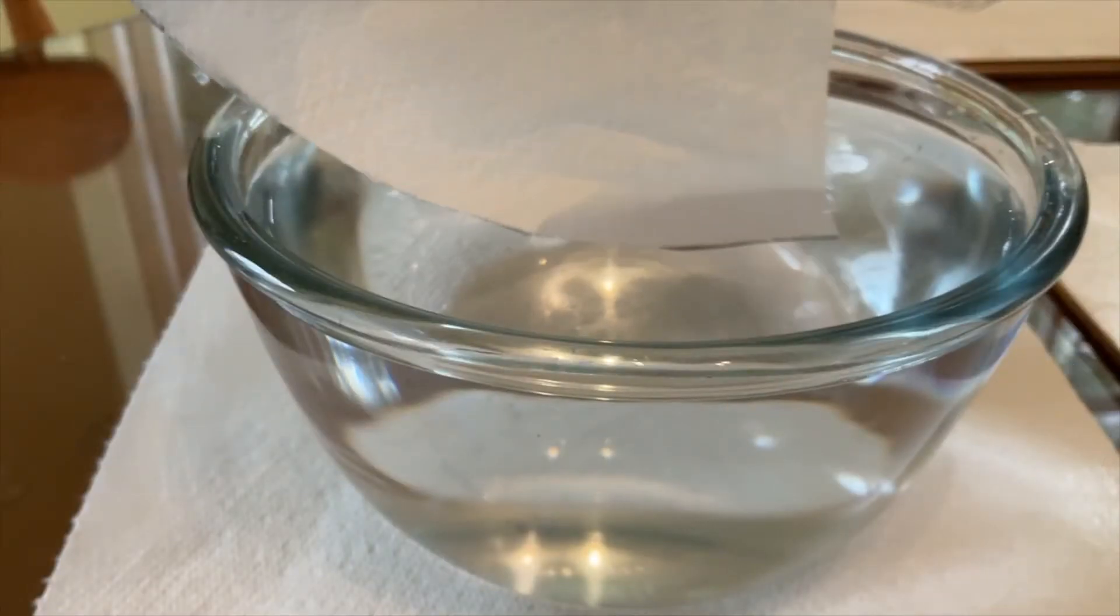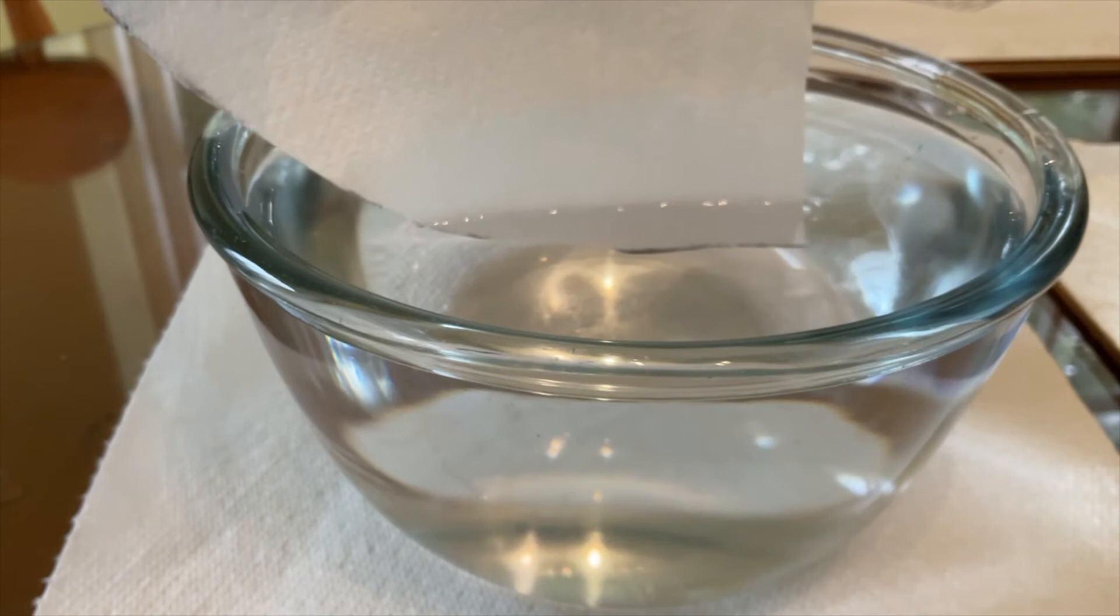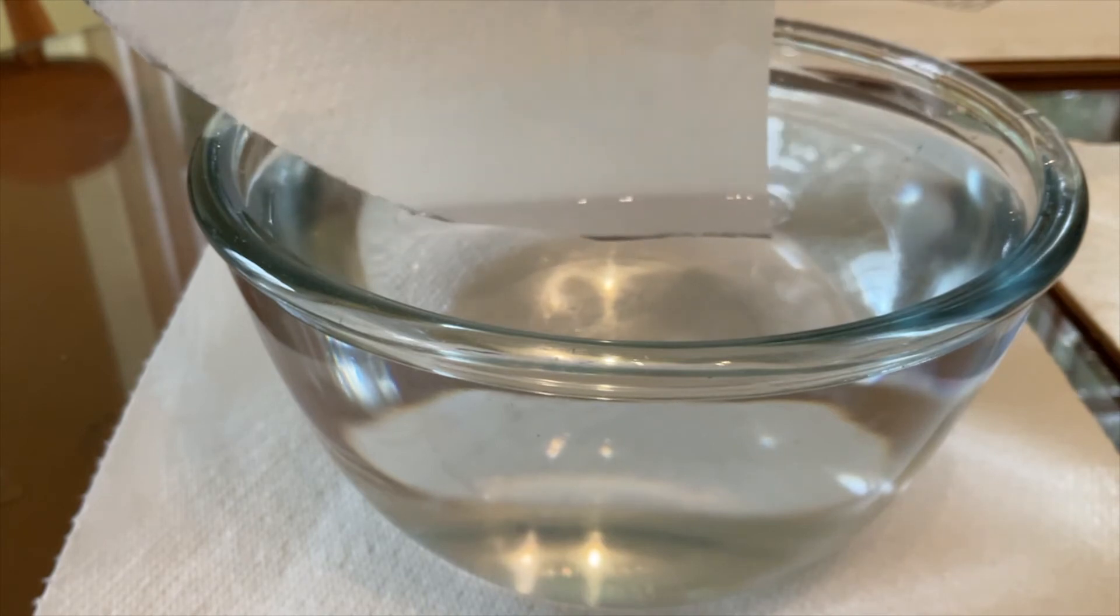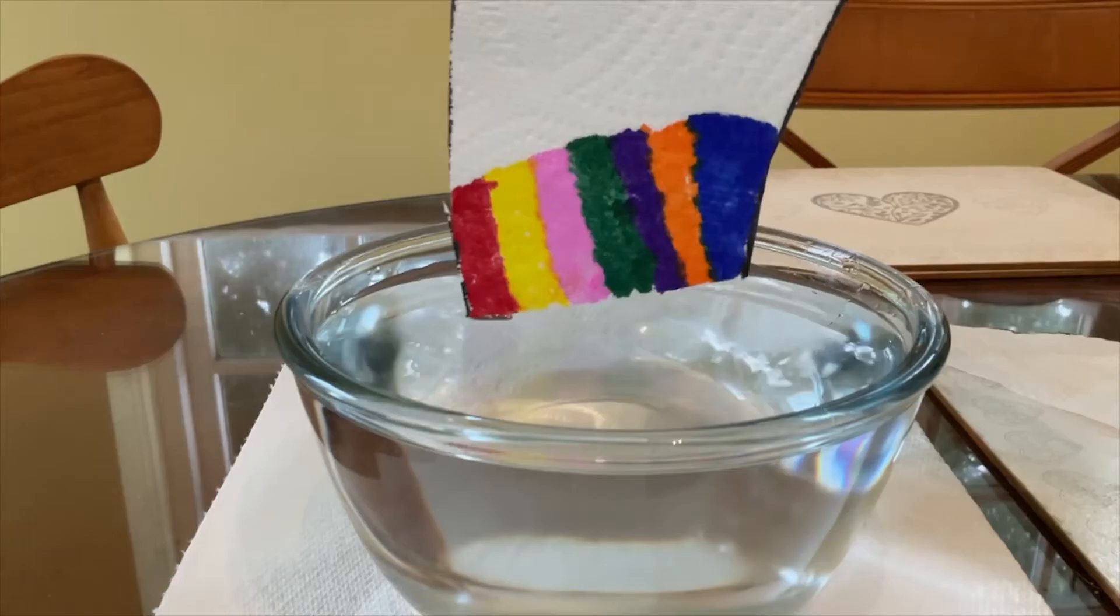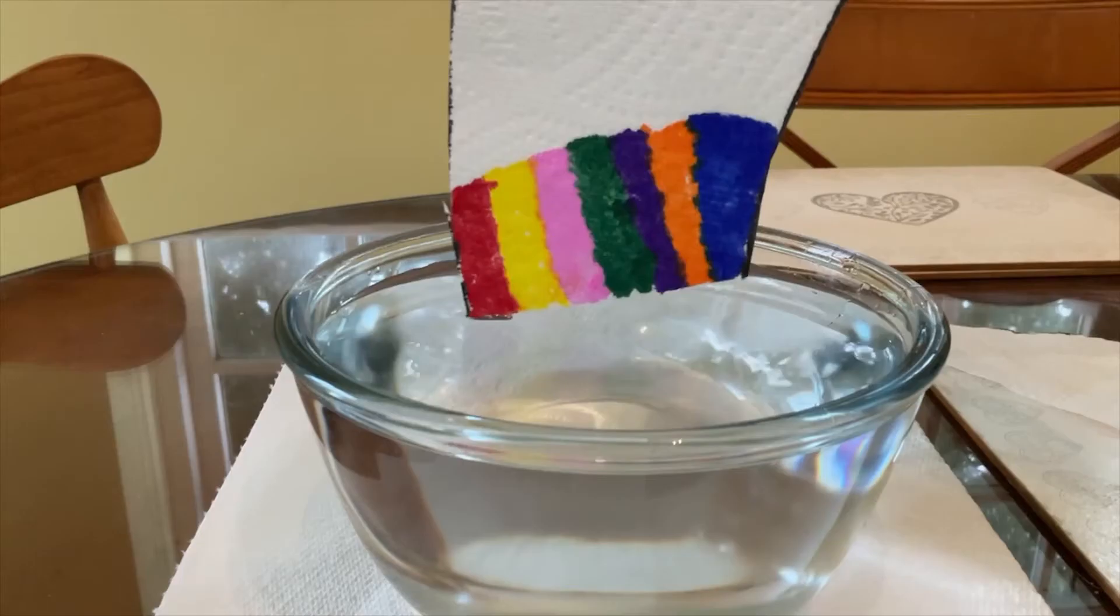So as one water molecule is absorbed by the kitchen roll, it pulls the next water molecule along with it thanks to cohesion. That water molecule pulls the next one along with it and so on, a bit like a chain. And so the water travels up the kitchen roll. But what will it do to the pens? How will the rainbow grow?